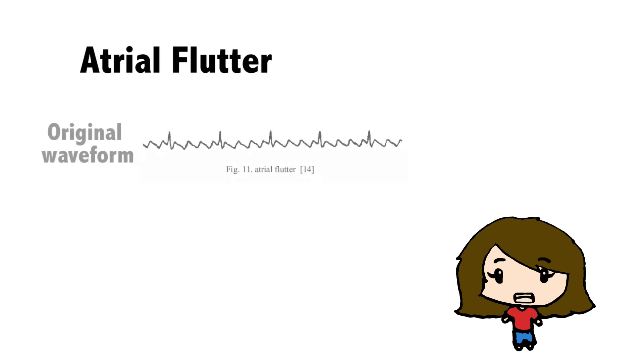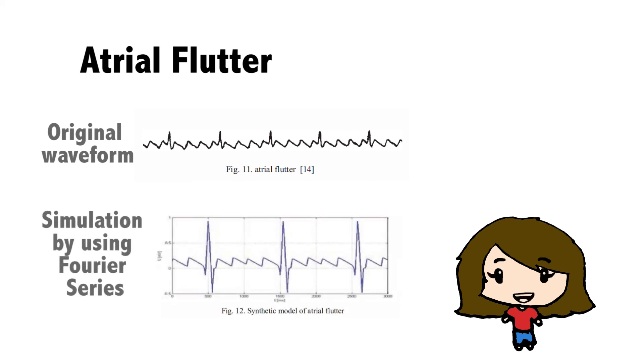Atrial flutter is a type of heart failure which is caused by abnormal proliferation of cardiac conduction in atria. The simulation needs stronger intervention in basic model of synthetic ECG signal.